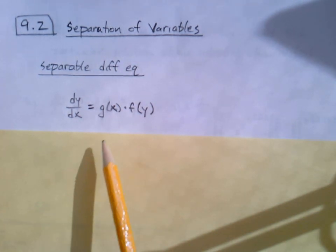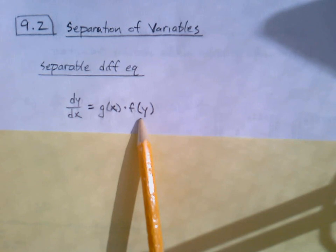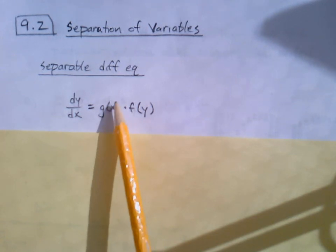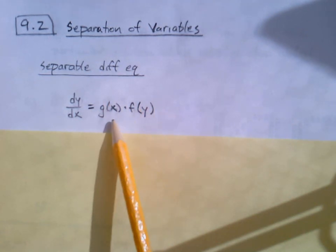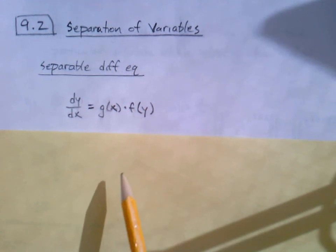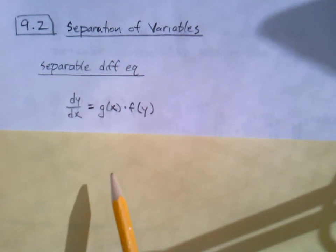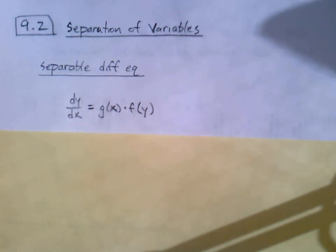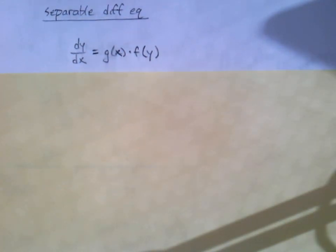dy over dx, if it can be thought of as some function of x multiplied with some function of y - g of x times f of y - it's like we've separated the x's and the y's and we've got a product between them. If it's possible to do that, then we call it a separable differential equation.